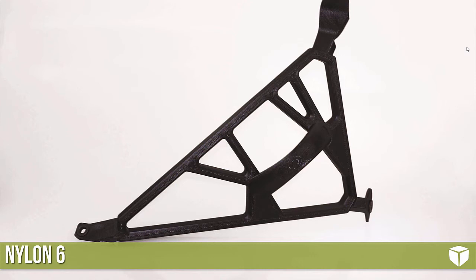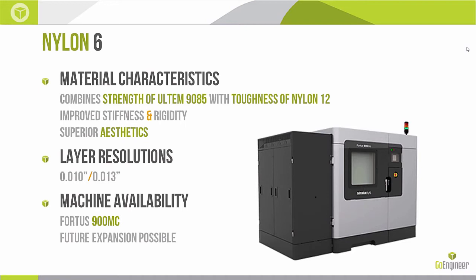Nylon 6 — I like to think of it as the big brother to Nylon 12 in terms of mechanical properties and use cases. Here you see a jig with a pretty organic shape that would not be fun to machine, mold, or weld together, but with 3D printing complexity is free. Nylon 6 has greater strength than Nylon 12 — it really rivals Ultem 9085, which was our flagship material just a few years ago. It has the strength of Ultem 9085 but also the same toughness that was so important to Nylon 12. Stiffness has also improved over Nylon 12.